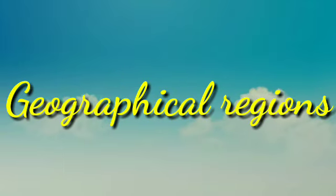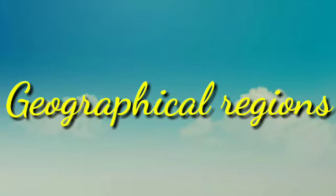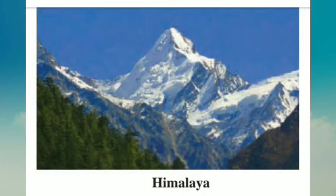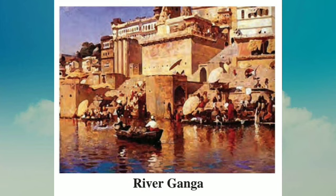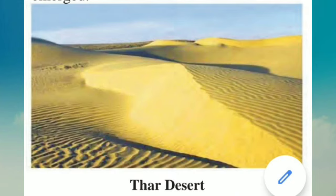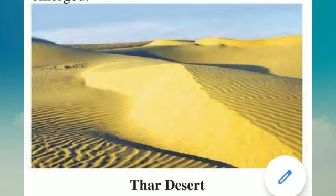Point number 4, the last point: geographical regions of India. The principal geographical regions of India are: 1) the Himalayas, 2) the plains of the rivers Sindhu, Ganga and Brahmaputra, 3) the Thar Desert, 4) the Deccan Plateau, 5) the coastal regions, and 6) the islands in the sea. In this way, we covered the Indian subcontinent and history.